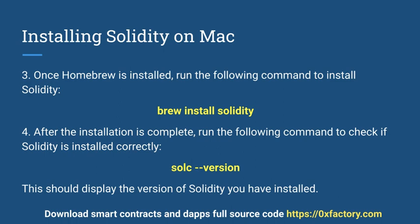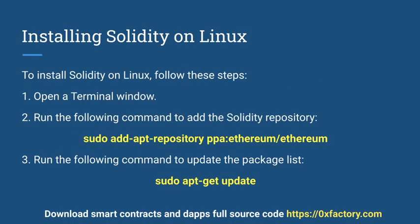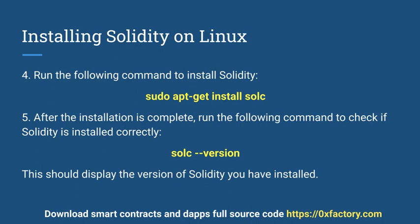This should display the version of Solidity you have installed. Installing Solidity on Linux. To install Solidity on Linux, follow these steps. 1. Open a terminal window. 2. Run the following command to add the Solidity repository. 3. Run the following command to update the package list. 4. Run the following command to install Solidity. 5. After the installation is complete, run the following command to check if Solidity is installed correctly.